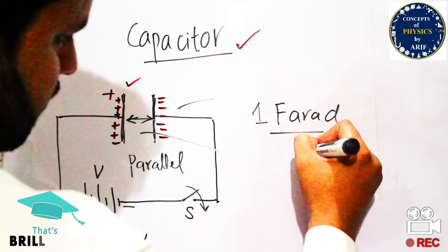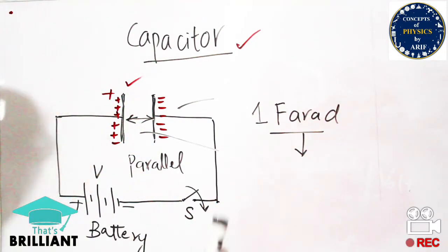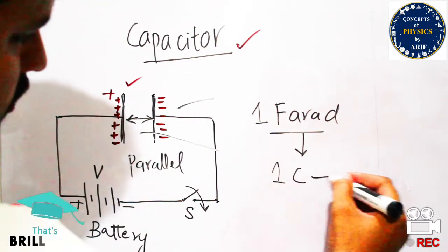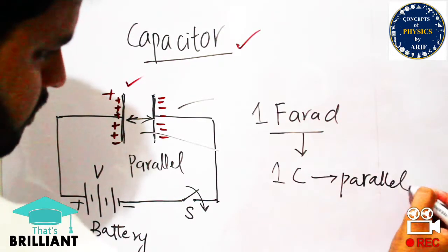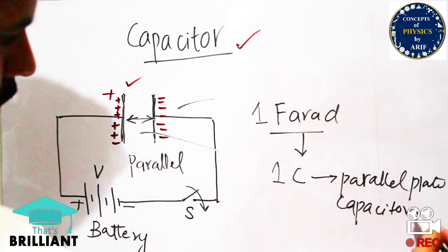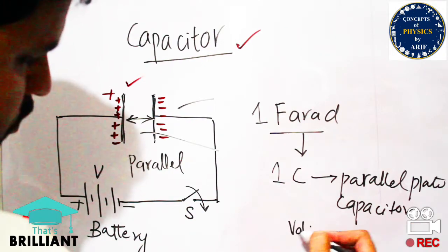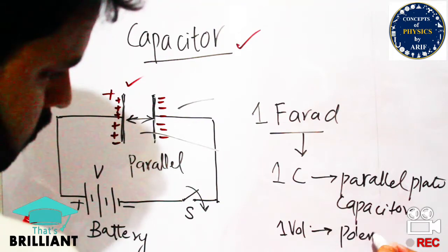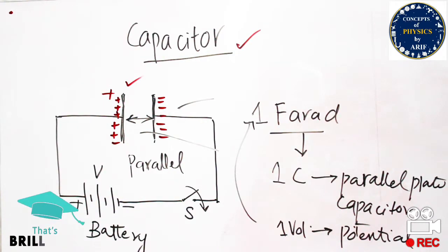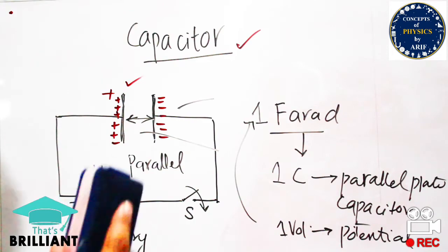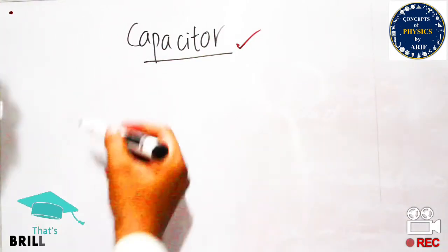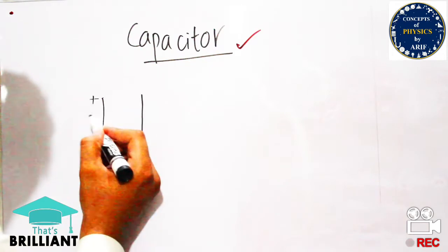So one Farad equals one Coulomb of charge per one Volt of potential difference. This is the SI unit of capacitance. For a parallel plate capacitor with a potential difference of one Volt, the capacitance value is one Farad. This is the final expression for the capacitor and capacitance. In summary, two metal plates placed in front of each other, when connected to a battery, have the positive terminal connected to one plate and the negative terminal connected to the other.